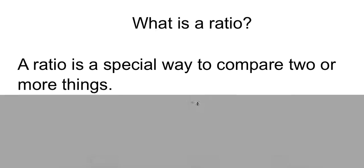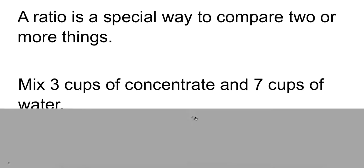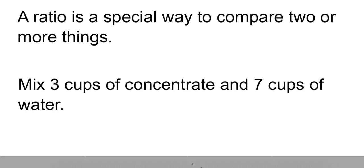For example, if I had this story over here of mixing three cups of concentrate and seven cups of water, I would write this in one of three ways. I can choose to do it with a colon by saying three to seven, or I can write it with the word two, three cups of concentrate to seven cups of water, or I can also write it as a fraction, three over seven.